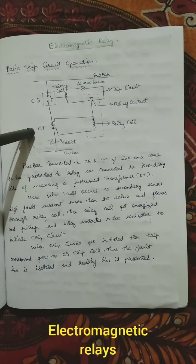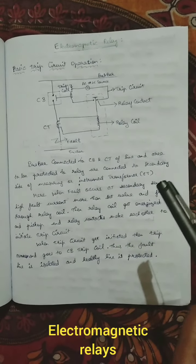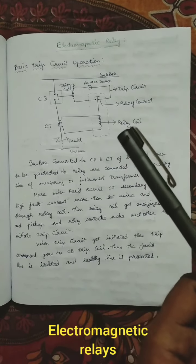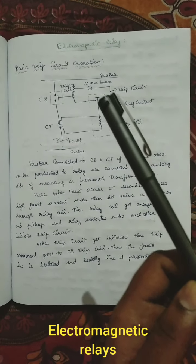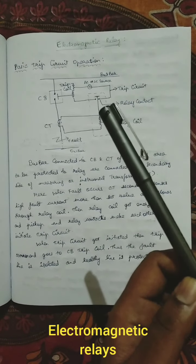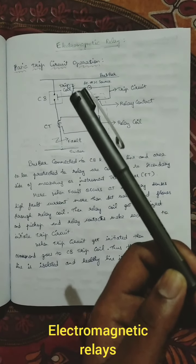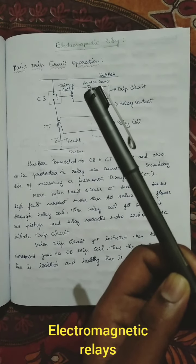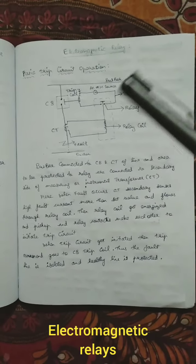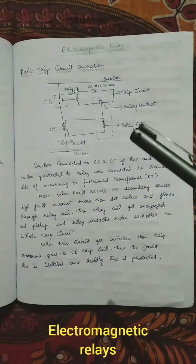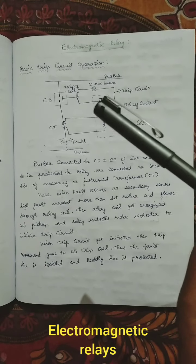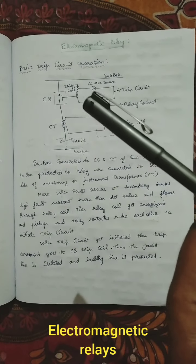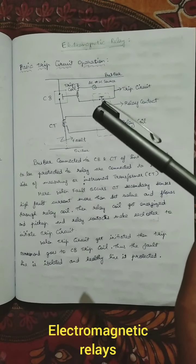When the fault value exceeds the set value, the relay coil automatically gets energized. The energized relay coil pushes the relay contacts to make contact with each other. After making contact, the circuit gets fulfilled — the source, whether AC or DC, completes the circuit through the relay contacts.